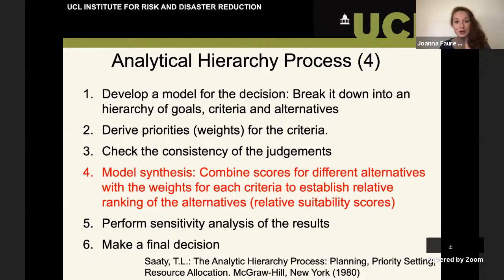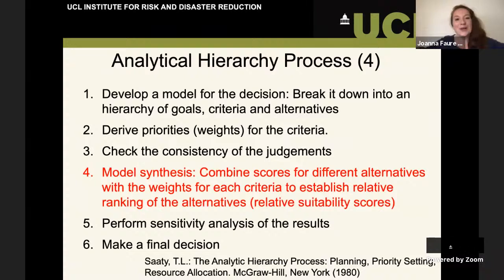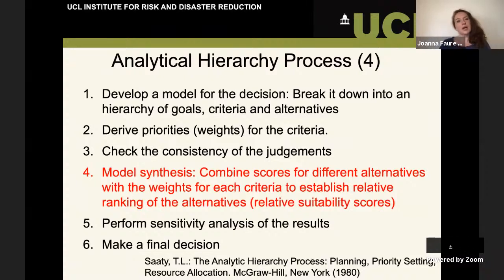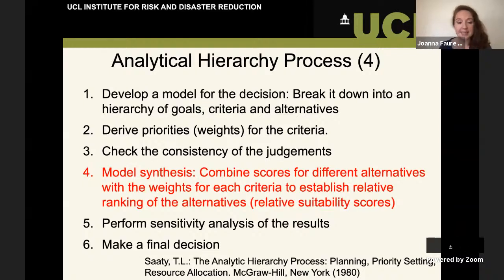For each criterion, we multiply the score — say we gave a score of between one and five for how easy it was to find, and the score was three — by the weight applied to that criterion. We do the same for every single criterion to get the score for that particular building. We can then look at all the scores across all the buildings. This gives us our model synthesis, which brings us to our ranking or scores for the different possibilities.